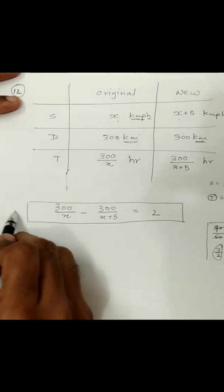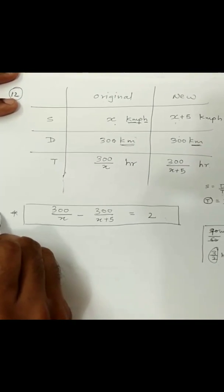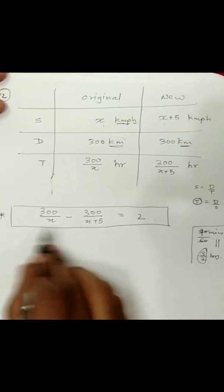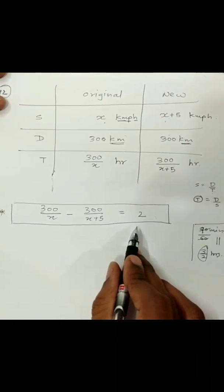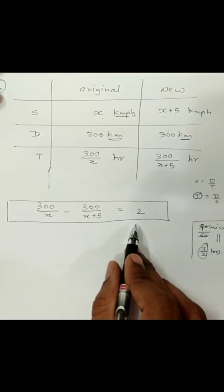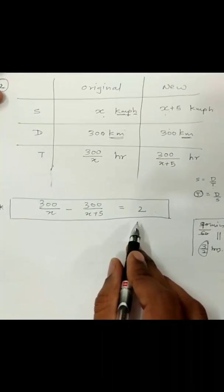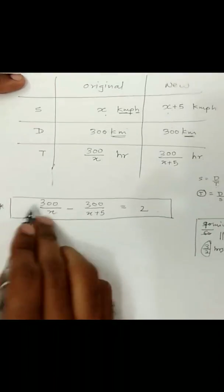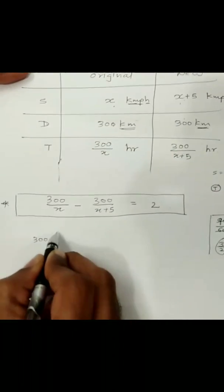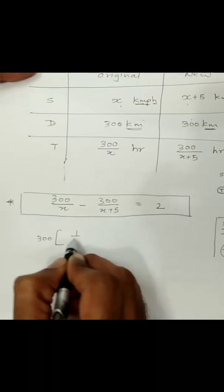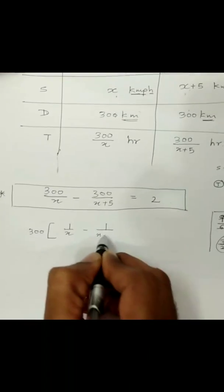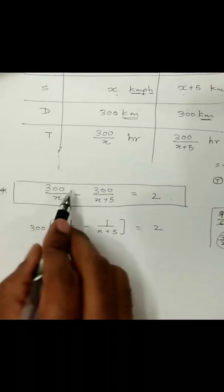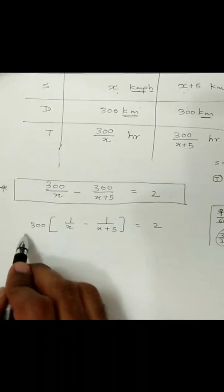To frame the quadratic equation, you get 2 marks out of 4 marks — so this is halfway done. Since 300 appears in both numerators, we can take 300 as a common factor outside, leaving 1 by x minus 1 upon x plus 5, which equals 2.